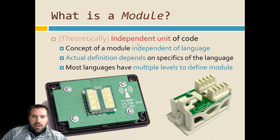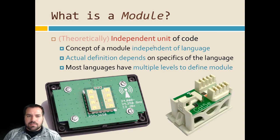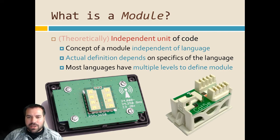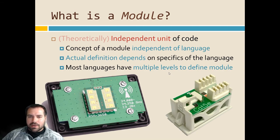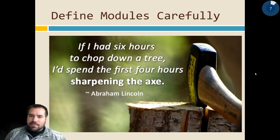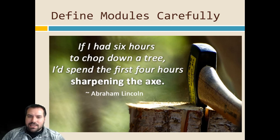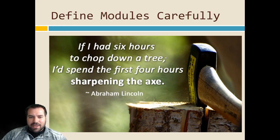Last time we talked about a module — something you've been hearing about since you started programming. A module is some set of code that's encapsulated or set aside in some way. In some languages they're actually called modules, in others they're called different things. I'd say each class is a module, each package or directory is also a module — at any level where code is grouped together, I'd call that a module. We talked about planning and defining modules in a way that makes your code easy to read, easy to expand, and easy to test.